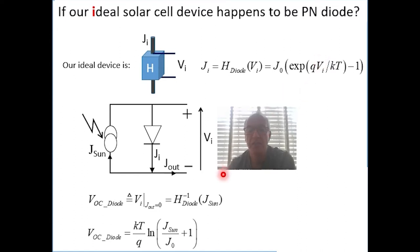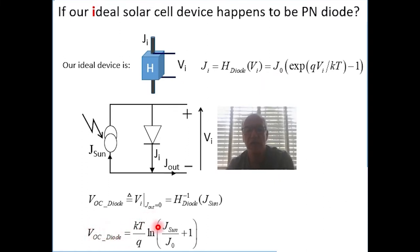Under these circumstances, if we are interested in the open circuit voltage, we can exchange between the current and voltage and derive the relation for the open circuit voltage. And we have here the famous relation between the current generated by the Sun, the dark leakage current, and of course the room temperature.